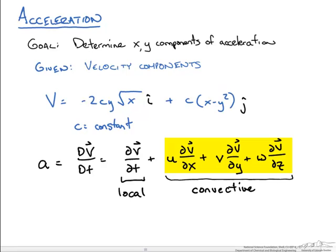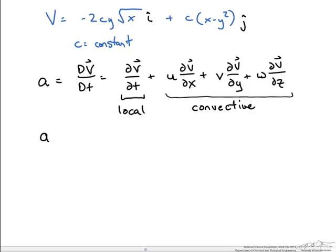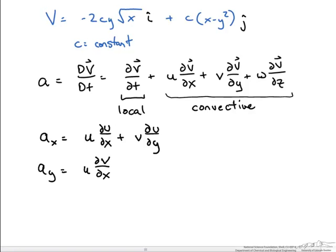Using this, we want just the x and y components of acceleration. The x component can be rewritten as u times du/dx plus v times du/dy. Similarly for the y component, we use u times dv/dx plus v times dv/dy.